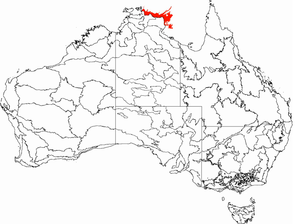The Australian land mass is divided into 89 bioregions and 419 subregions. Each region is a land area made up of a group of interacting ecosystems that are repeated in similar form across the landscape.